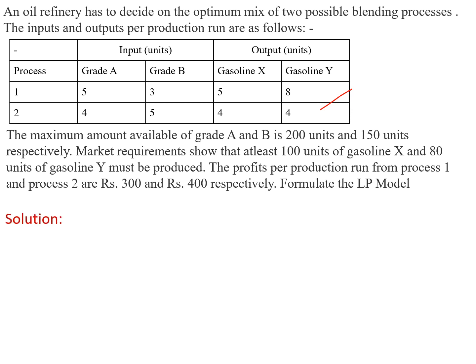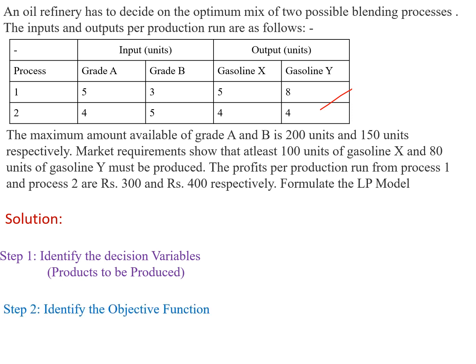The first step is to identify the decision variables — look for what products or processes the company is producing. Sometimes it is difficult to identify the decision variables, so look for the second step: identify the objective function. For this, look for words like profit, cost, or number of products. In the data, profits for production run from process 1 and process 2 are 300 and 400, and we know that profits should always be maximized.